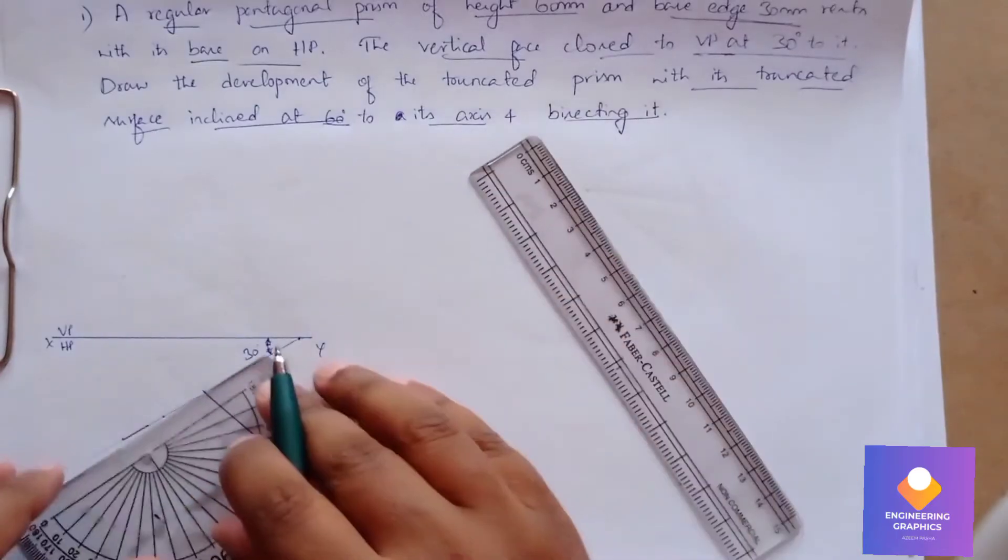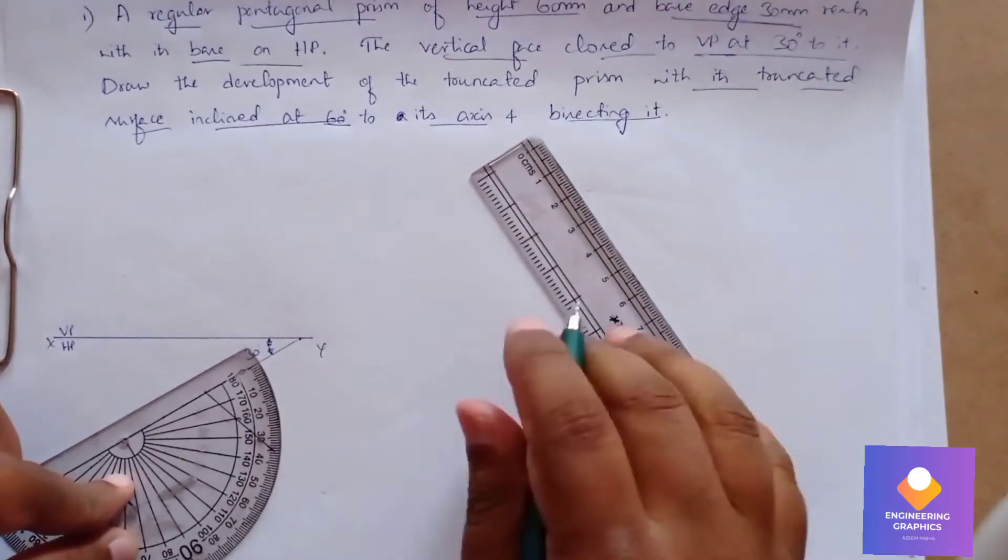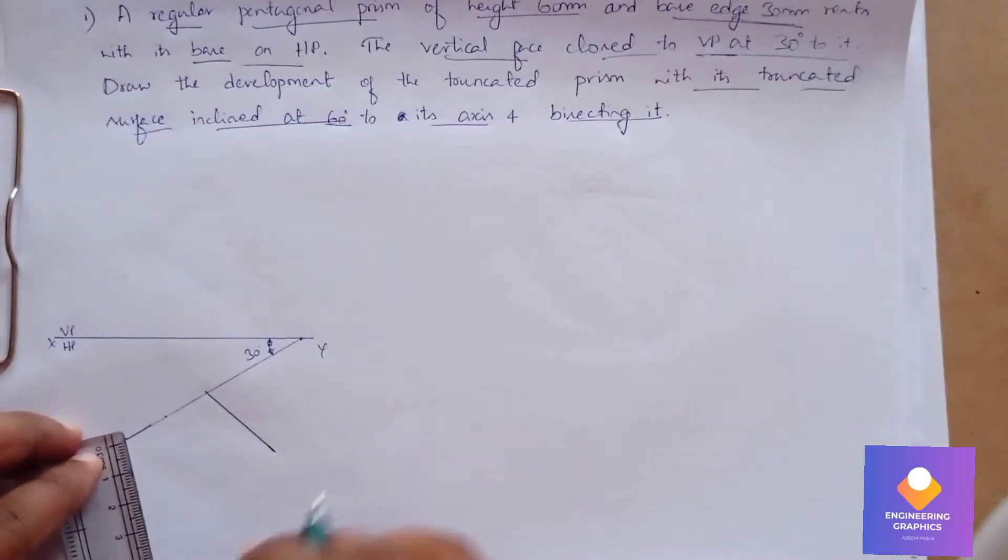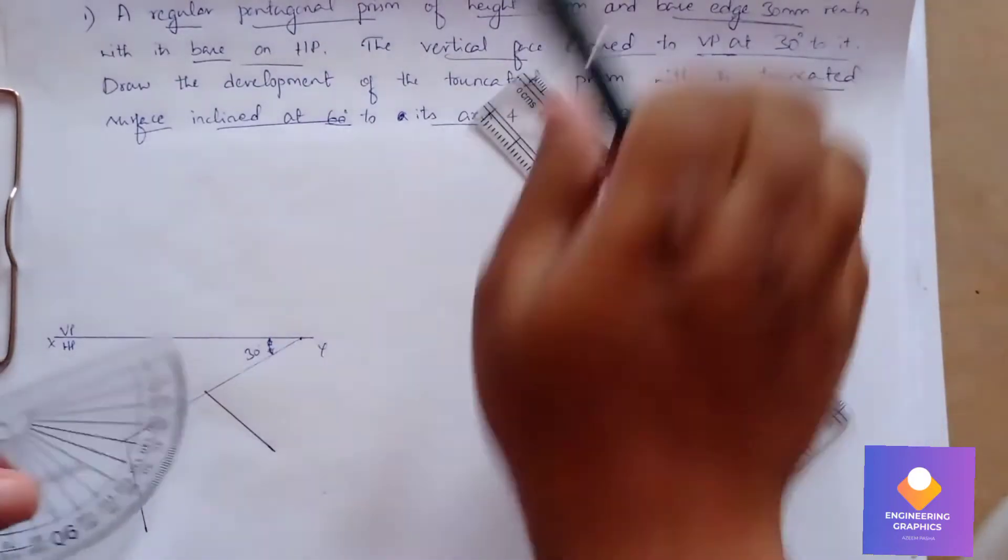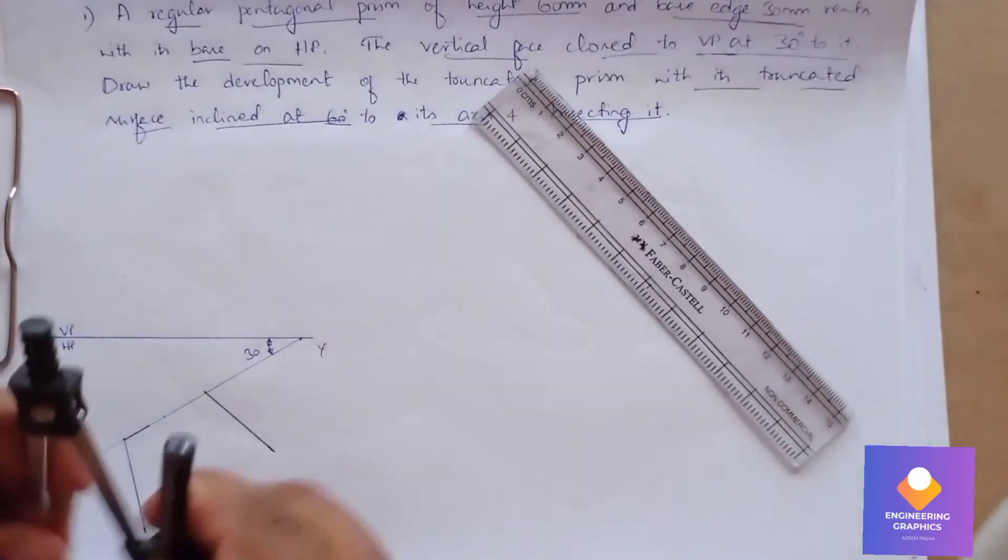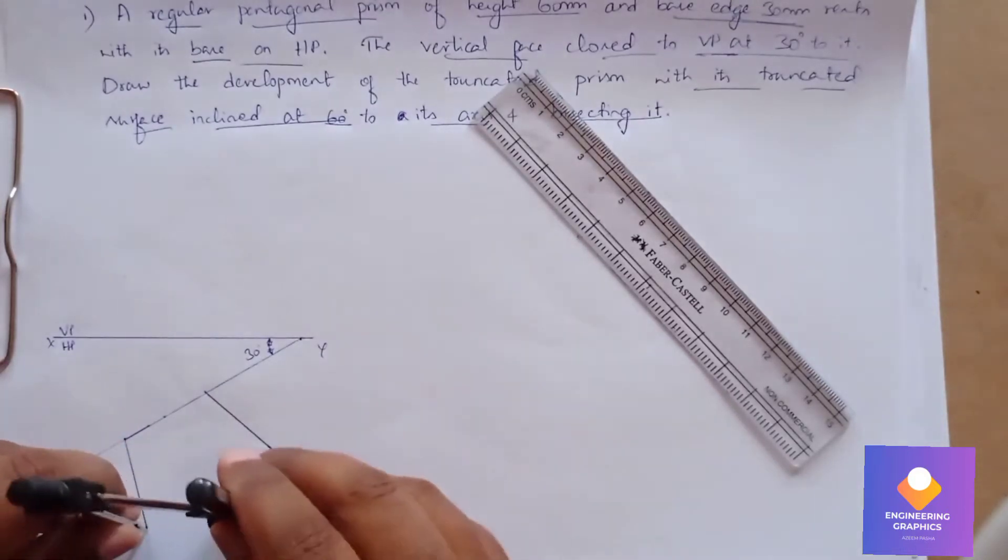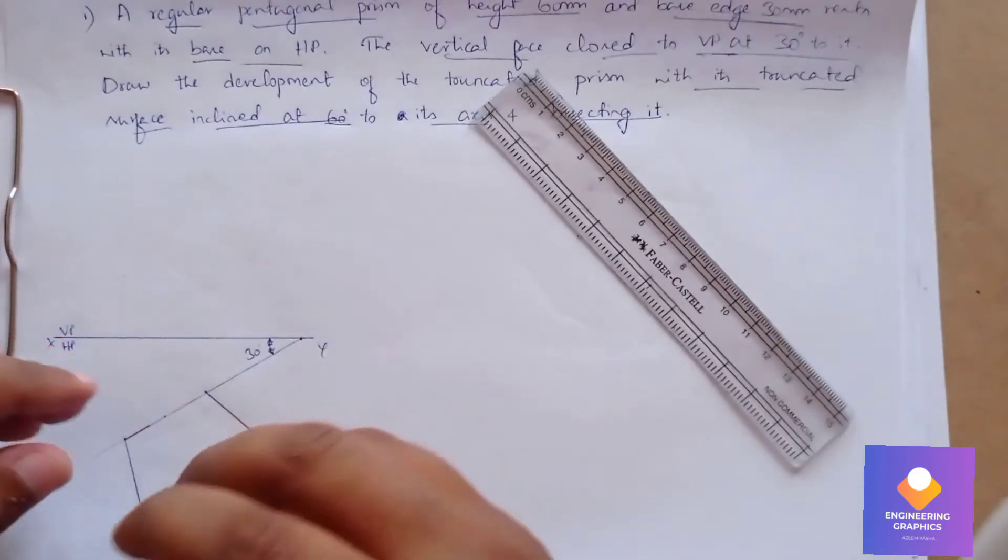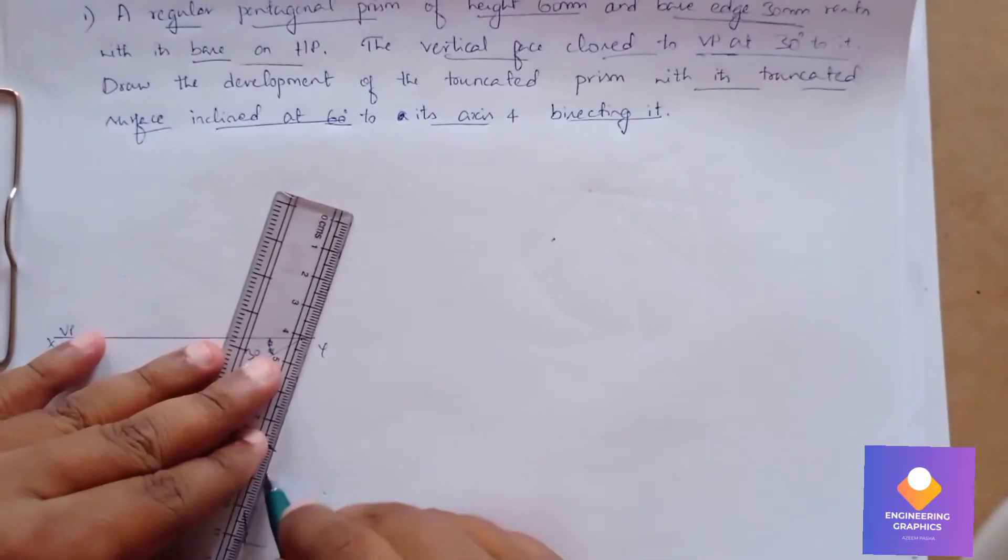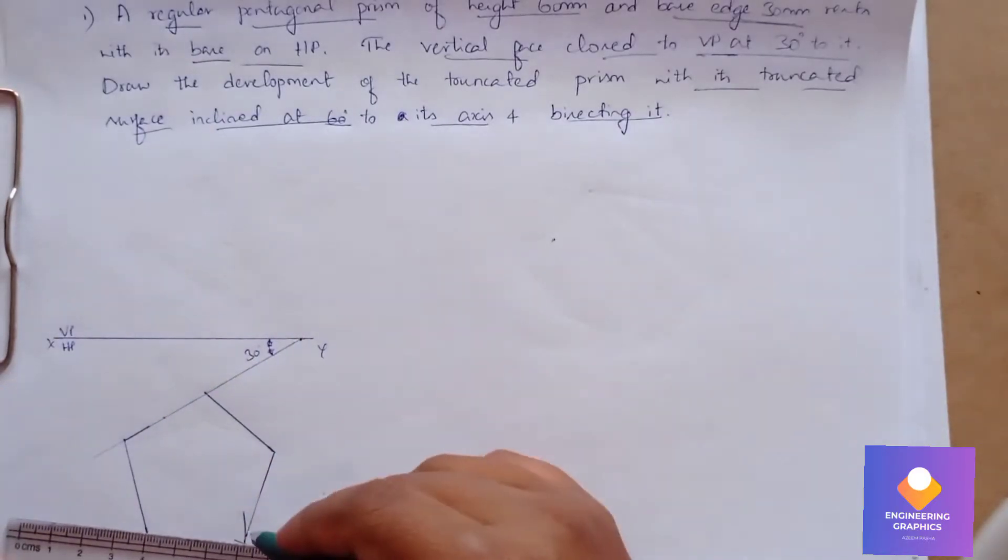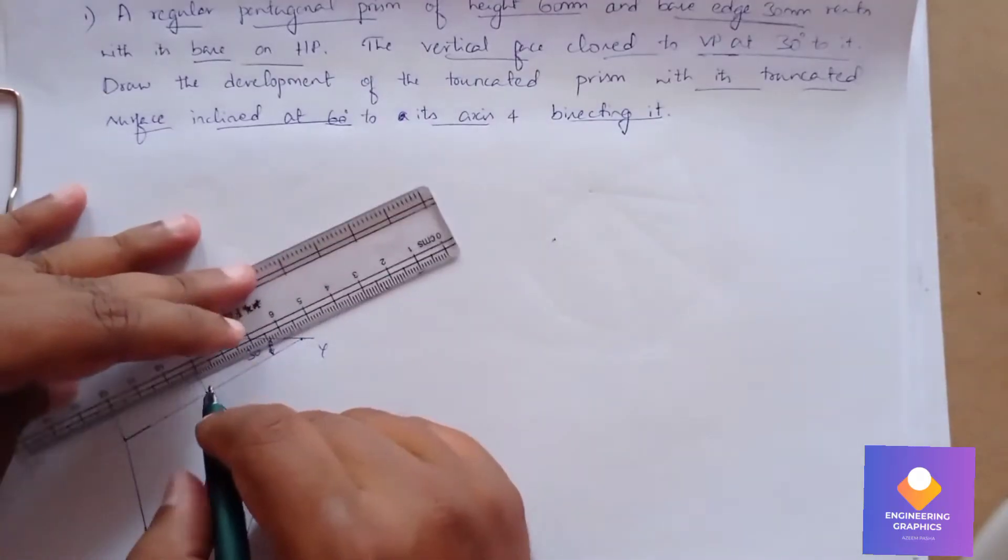Draw a line of length 30mm passing through that angle point. Same way, keep the protractor and mark 72 degrees and draw a line of 30mm because the pentagonal prism has a dimension of 30mm. Take the protractor and cut the arc of 30mm. We have constructed a pentagon. We can show the dimension of 30mm.